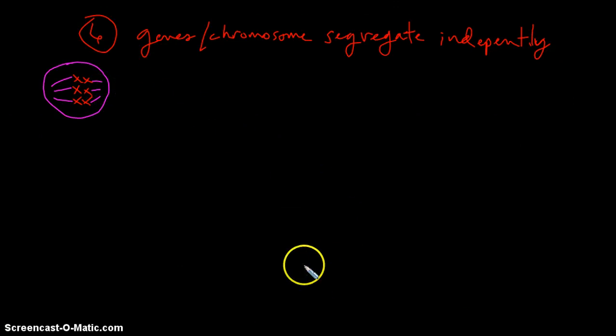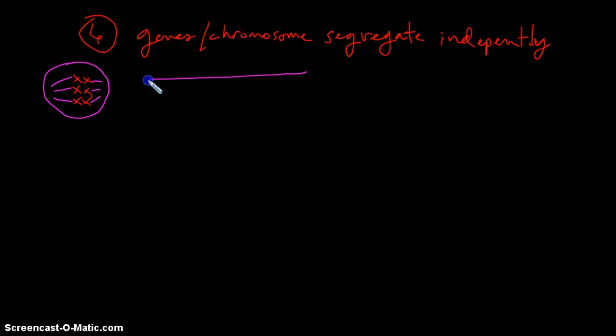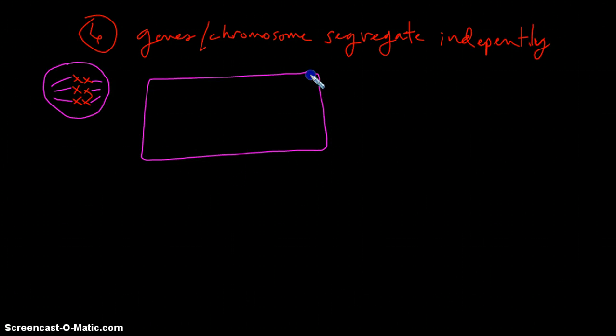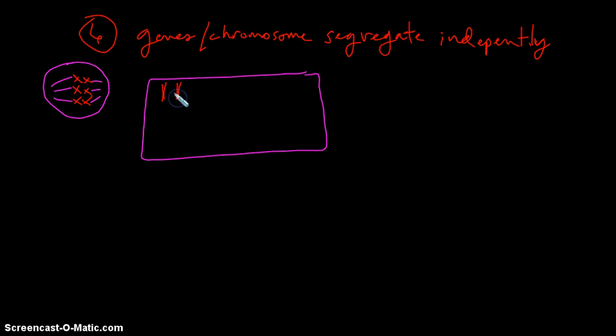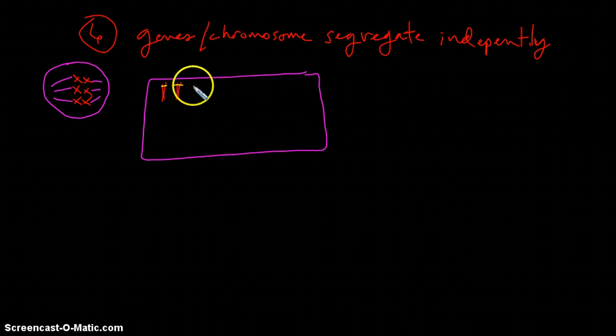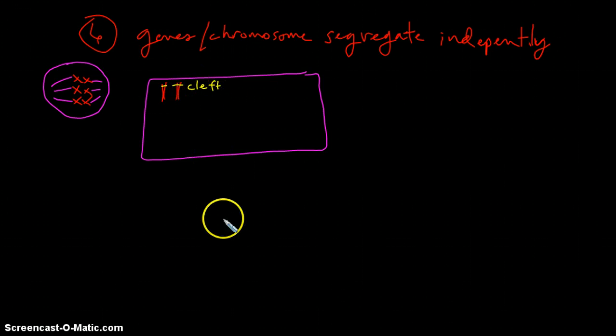We can also look at this in terms of maybe a karyotype. So if we have a karyotype, let's say for instance there is on chromosome one, strictly hypothetical here, if there is a gene for, say, chin shape. So in this instance, a person would have a cleft chin. And then we go down to chromosome 21.